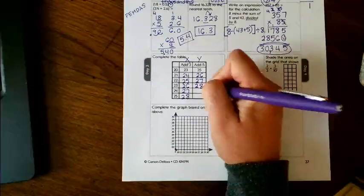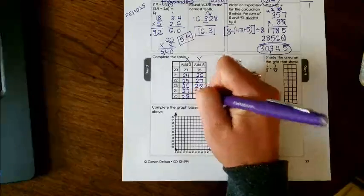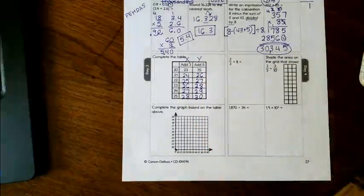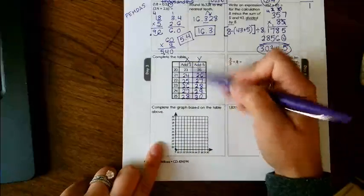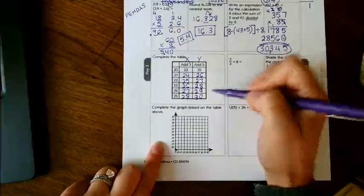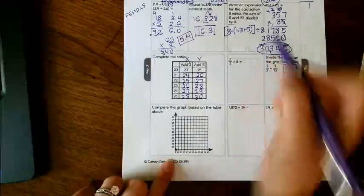25, 26, 27, 28, so this should be 29 and 30. Now you're just plotting these on the graph. So everyone in this column, you're going over and then everyone in this column you're going up.